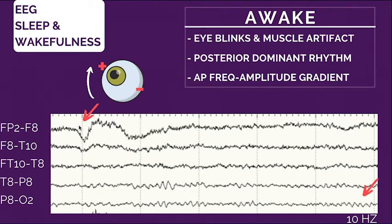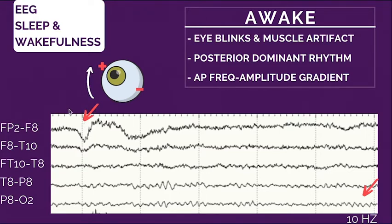Eye blinks appear mostly on the frontal leads because the eyeballs are closer to and placed in the anterior portion of the skull. They're on both sides usually because we have two eyes. So you're going to see these waves on the anterior leads on both sides. And if you pull up the video that comes with the EEG, you can use your cursor to go to that exact second and confirm on the video if the patient is blinking.